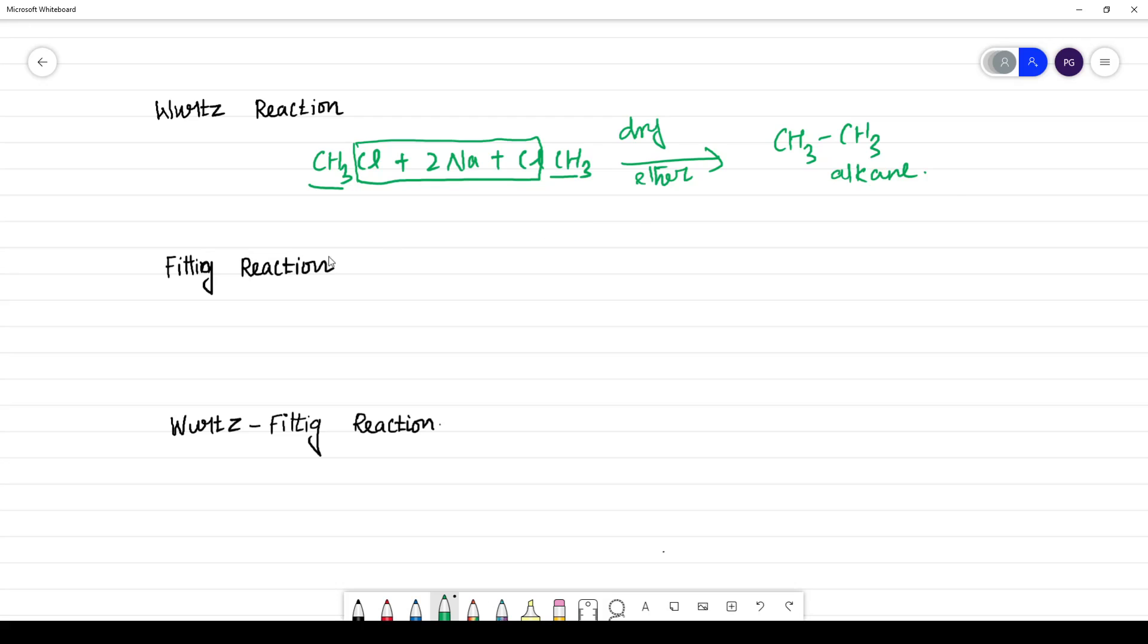What is Fittig reaction? Two aromatic. This is C6H5, two aromatic. This is C6H5 with two Na plus another aromatic.